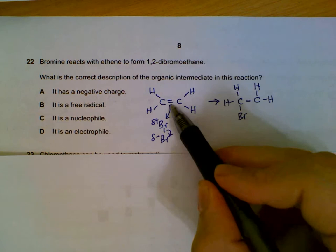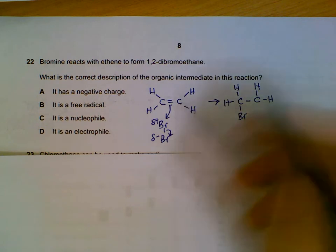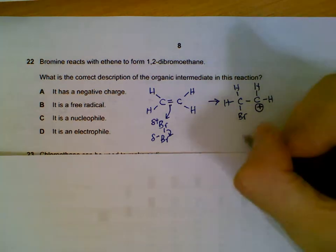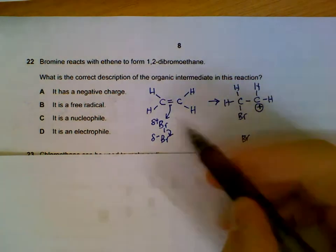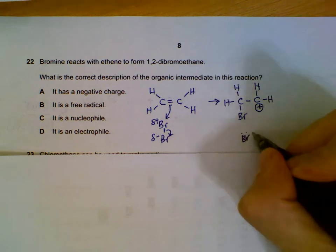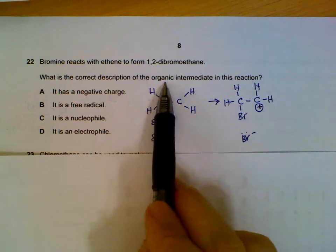Since this carbon loses the electron, it will be short of one electron, so it will have a positive charge over here. And this Br, since it receives two electrons, will have a negative charge.